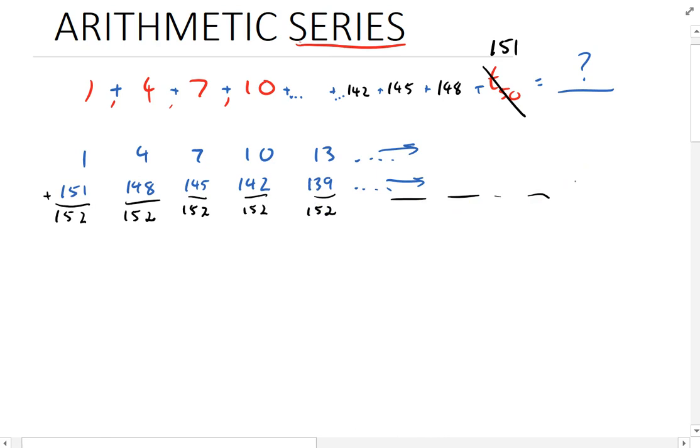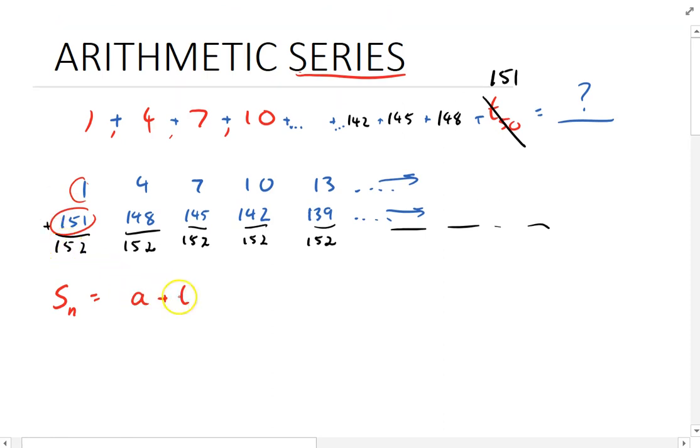So this brings me to our arithmetic series formula, or at least one of the formulas we can use. The sum of an arithmetic series, so if we're using a series, we're going to say Sn is going to be equal to the first number, which we can call a, plus the last number, which we can call l. Then we just need to say that a plus l is 1 plus 151, which is 152, and we just have to think how many 152s are there. Because if I can add up all the 152s, then I'll have my final answer. I would have added up all the numbers.